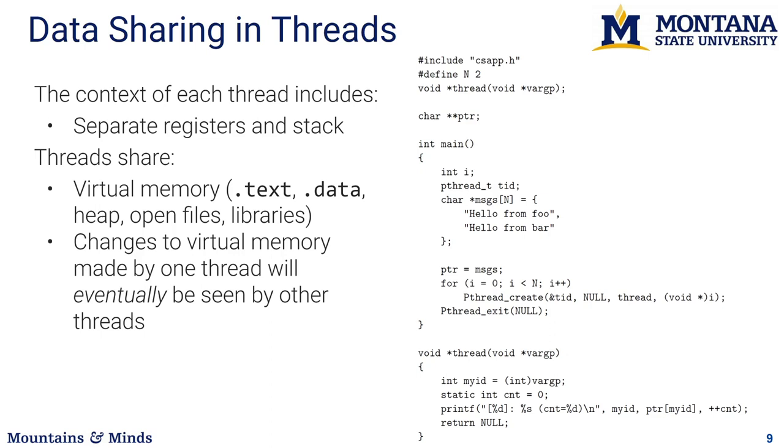They will also share heap, so basically if you allocate something using calloc or malloc, that will be visible to all threads as long as the threads can get a pointer to that memory location. They will also share things like open files and any dynamically loaded libraries. So, they kind of do share a lot.